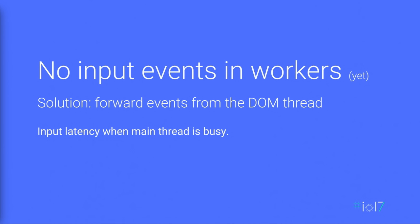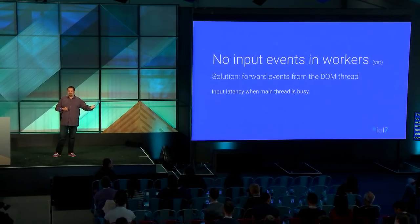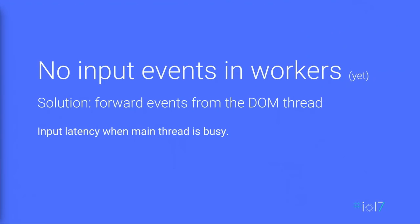If you're making a game engine, you'll also need input events in the worker — but there are no input events in workers. The solution is to forward events from main thread via postMessage, but this has a serious downside: if the main thread is busy, you'll introduce input latency. This is still an unsolved problem, but we're determined to make it better in the future.